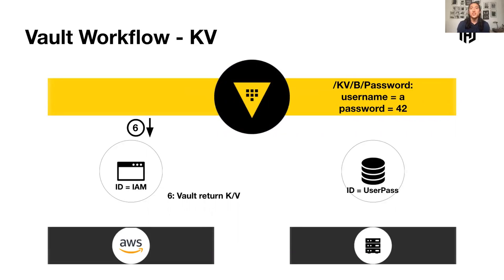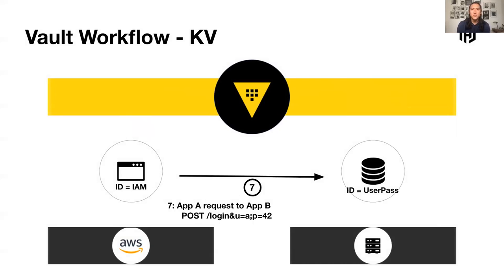Vault is going to check that your policy allows the requesting identity access — in this case to the /kv/B/password path. If it does, Vault will return that data. The username and password combination is a simple example of what might be contained inside. I generally suggest putting your usernames inside the key-value store as well, because it's helpful when troubleshooting and validating that you're logging in properly. At this stage, Vault has returned my username and password to my application.